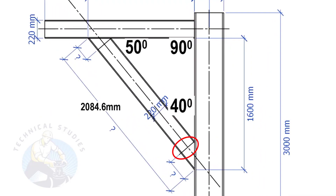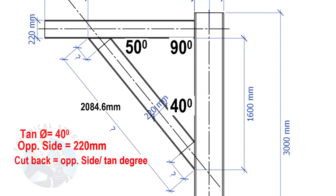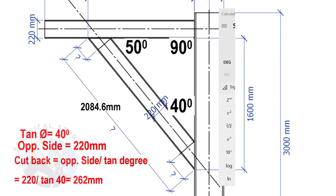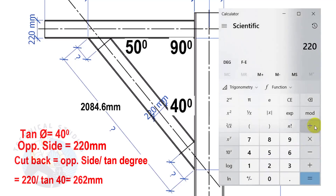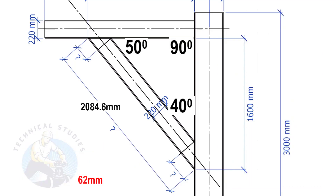The width of the beam is 220 mm and the included angle is 40 degrees. We will apply the tan rule to find the cutback length. Tan(40°) with opposite side equal to 220 mm — cutback equals opposite side divided by tan(degree). The cutback length is 262 mm.